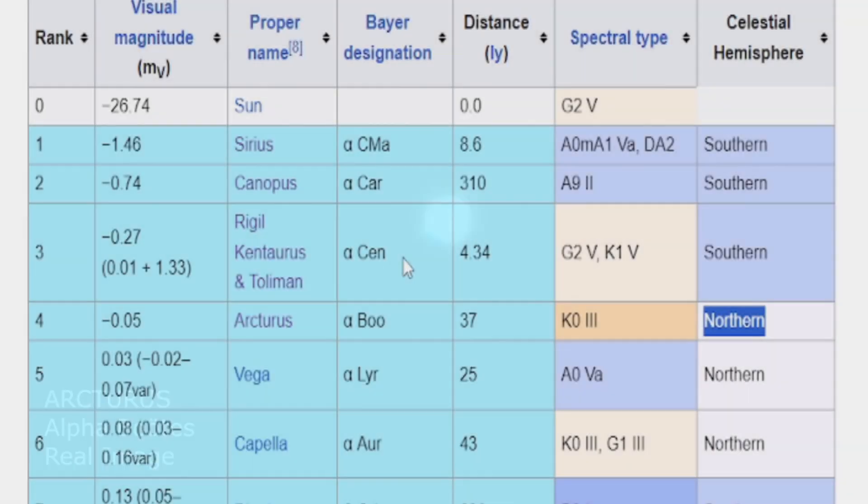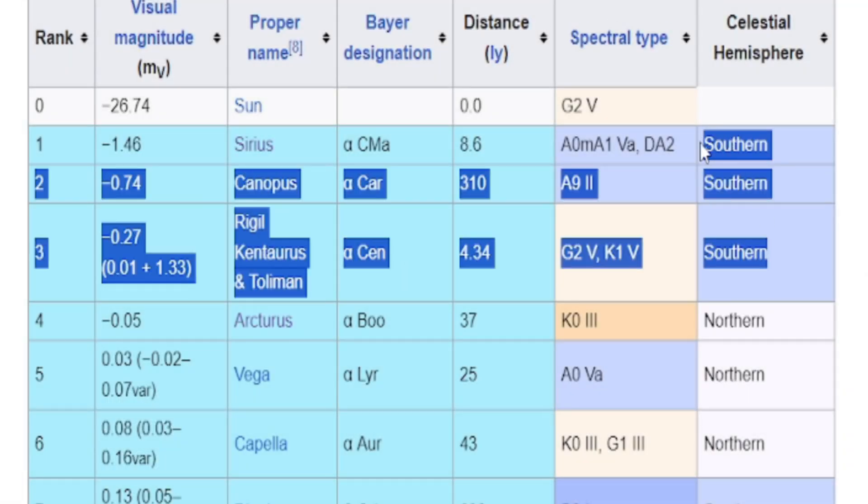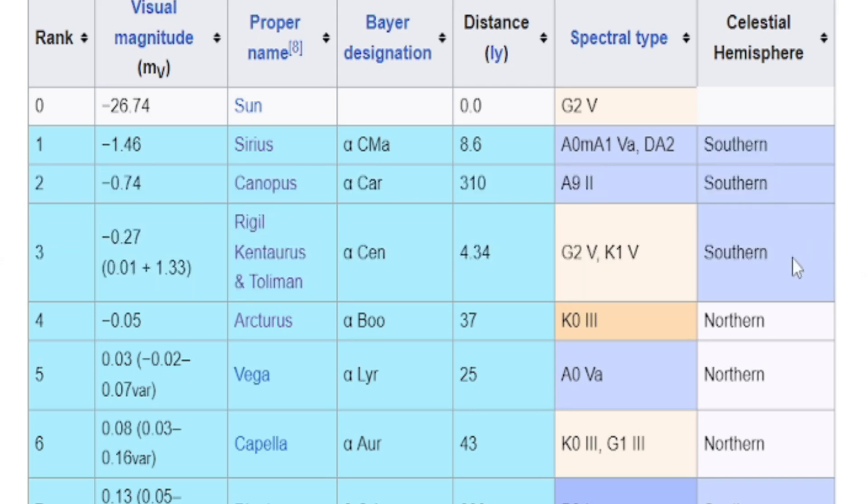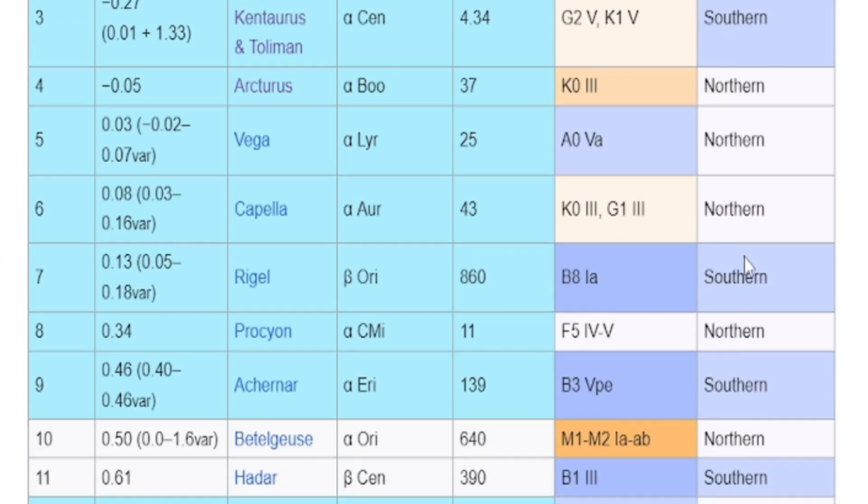People don't really think of that, but Arcturus, for us Northernies, is actually our brightest star. So we're actually a bit of a deficit, because the three brightest stars in the skies at night are actually all in the Southern Hemisphere, technically.